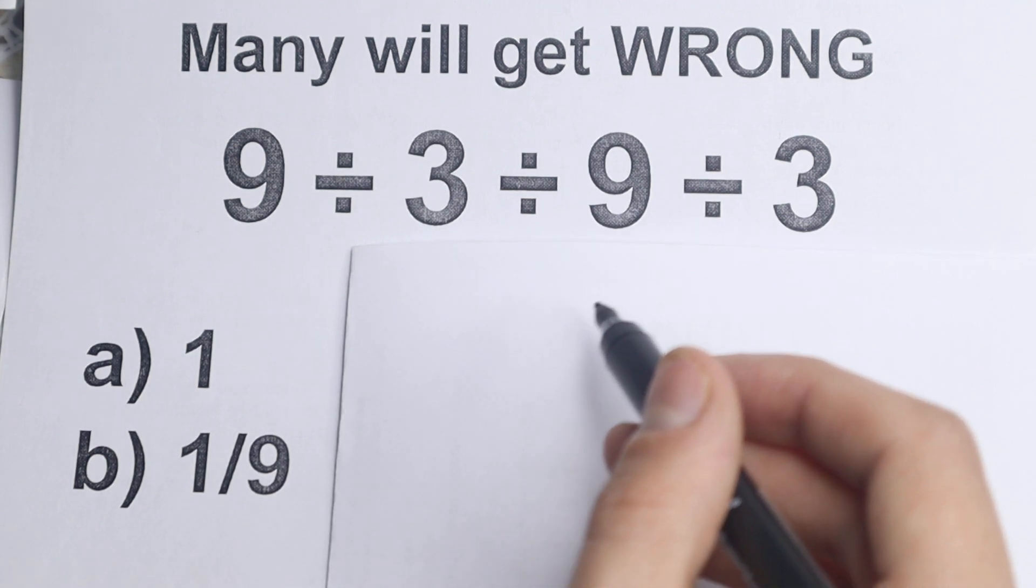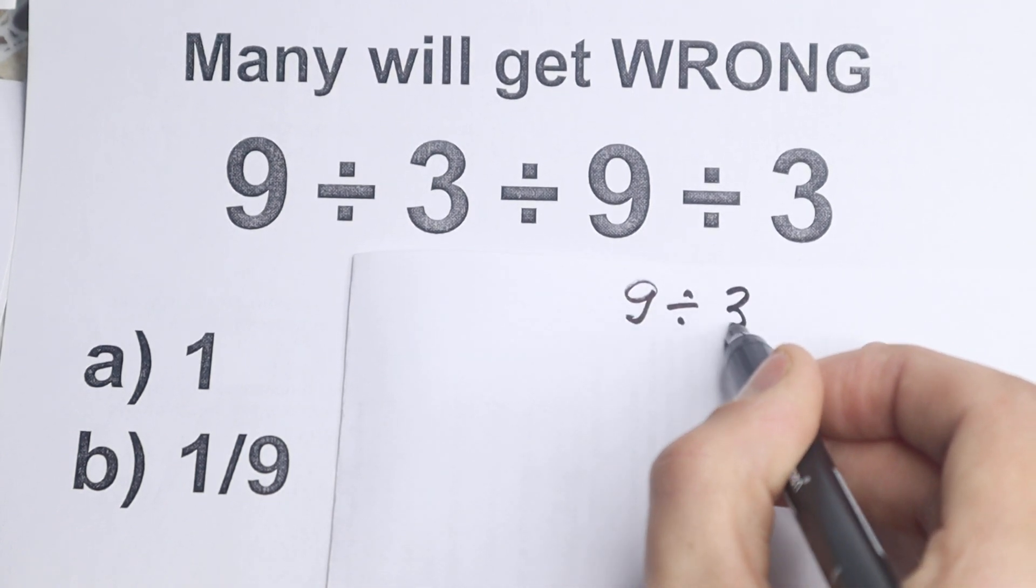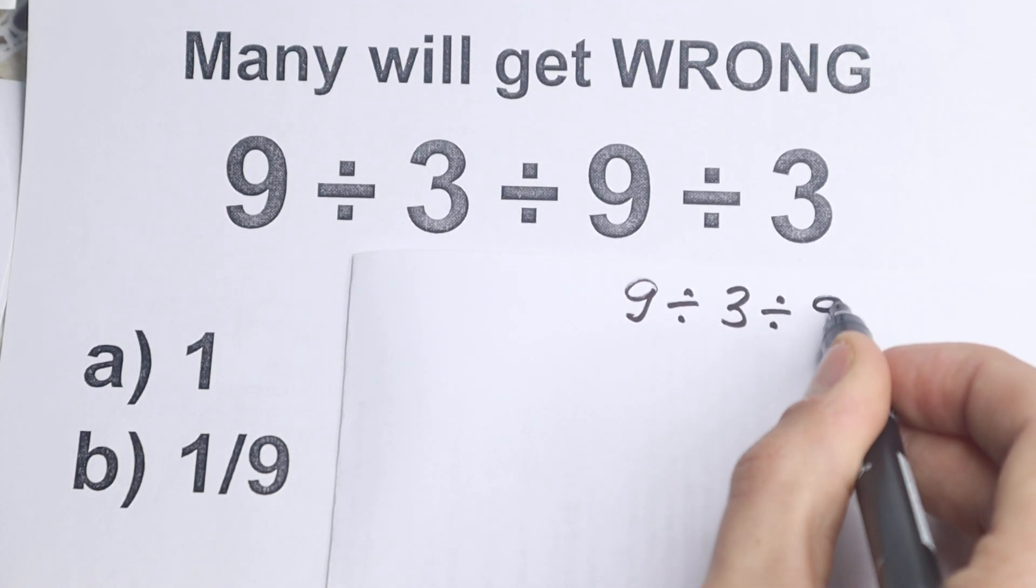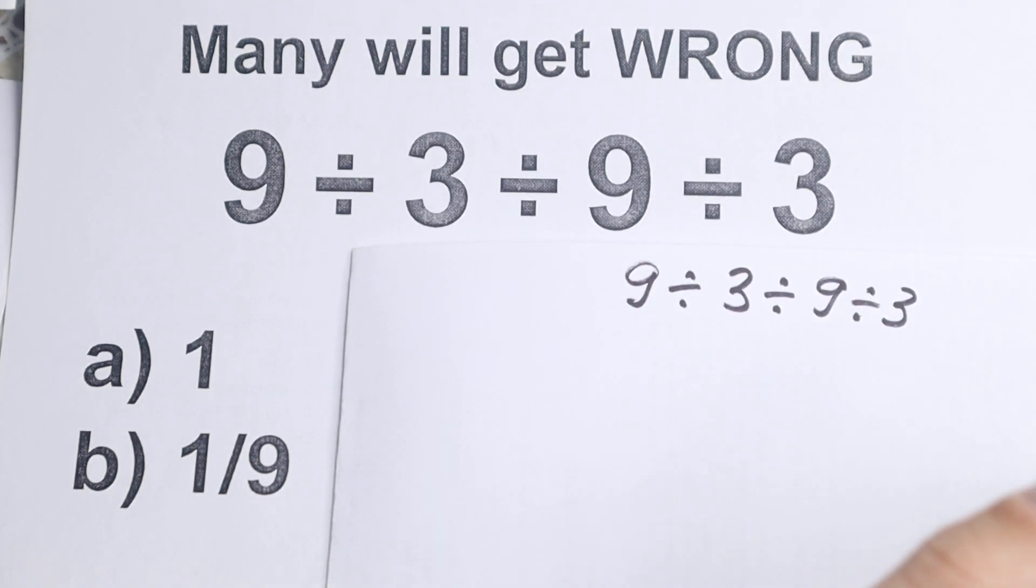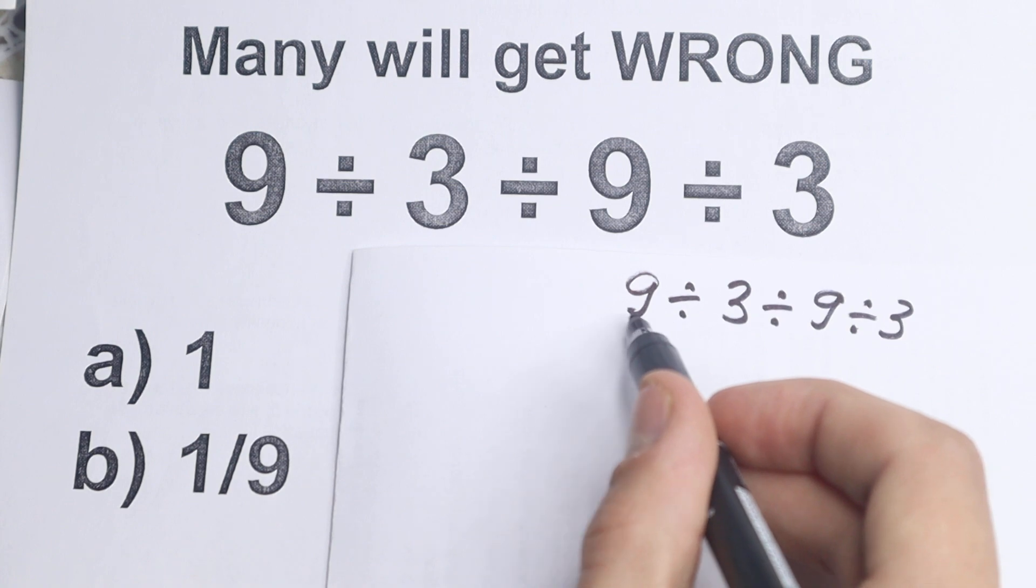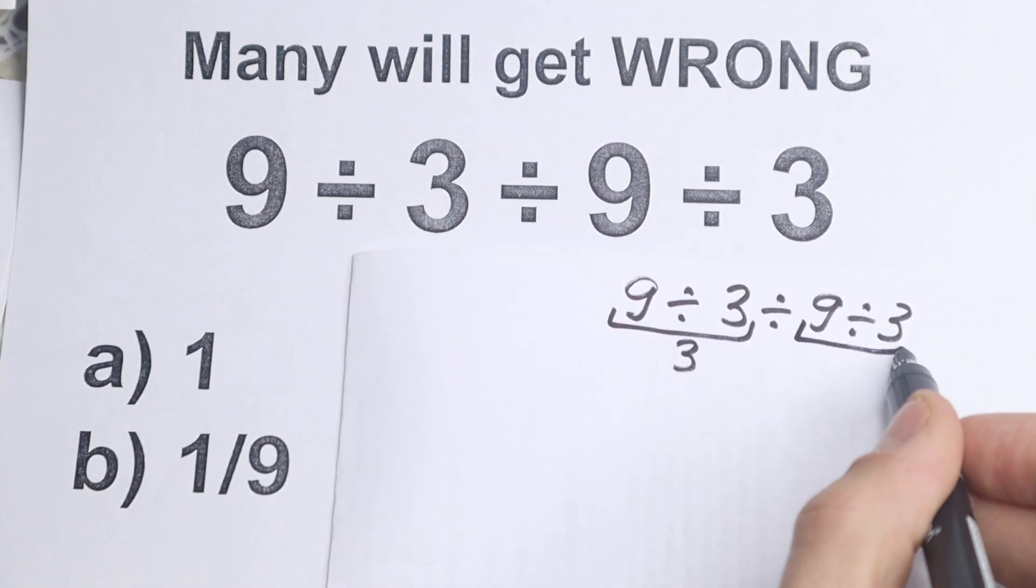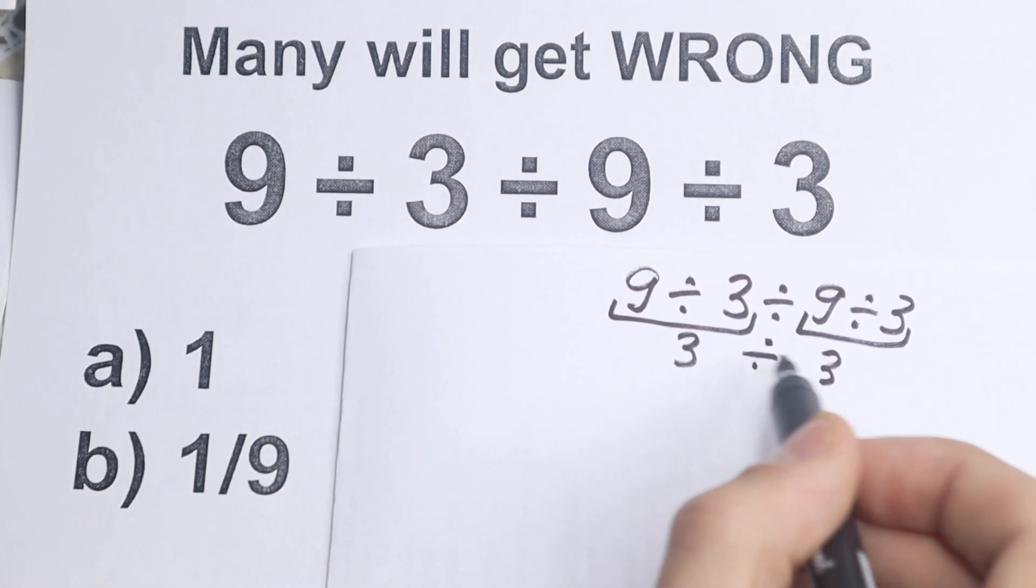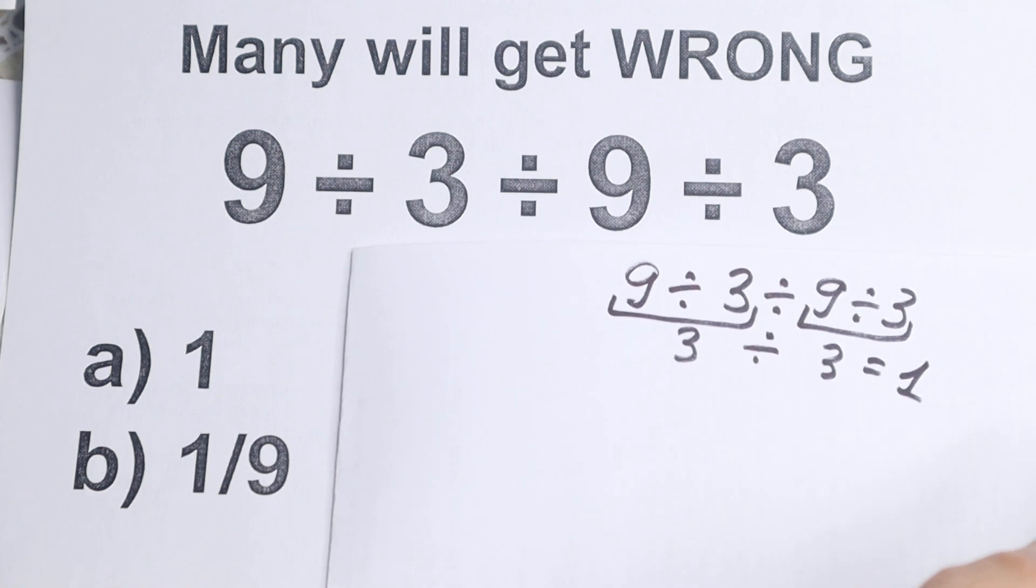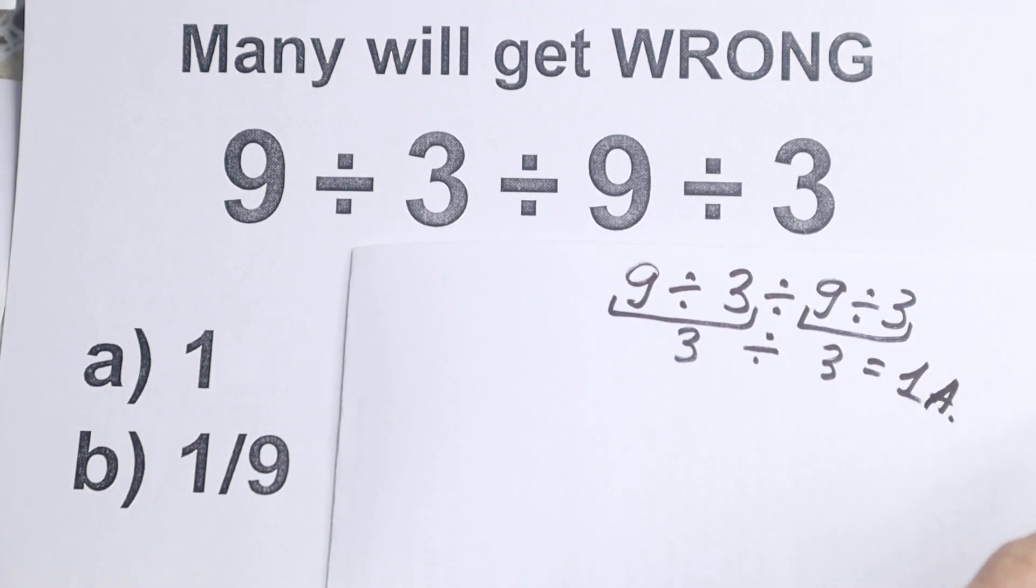Okay, so we have this problem: 9 divided by 3 divided by 9 divided by 3. What is the first way a lot of students solve it? They say, okay, 9 divided by 3 equal to 3, which is really great. And they say, 9 divided by 3 in the end equal to 3. So 3 divided by 3, we still have one division sign, equal to 1. And they say option A is the correct answer to this problem.